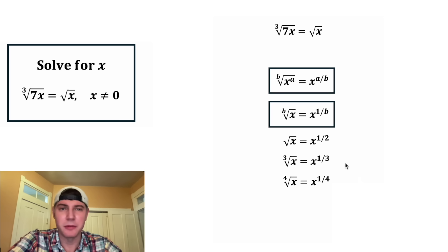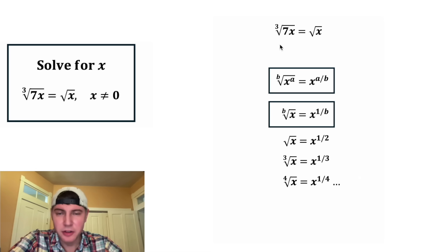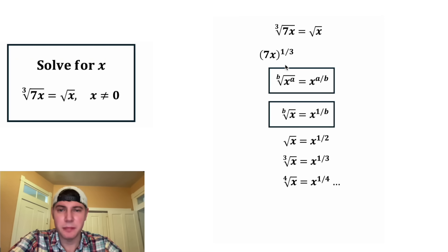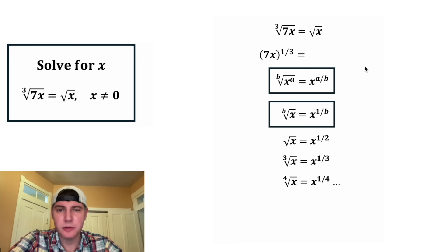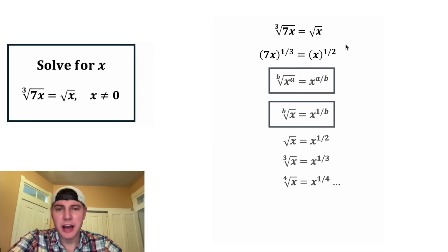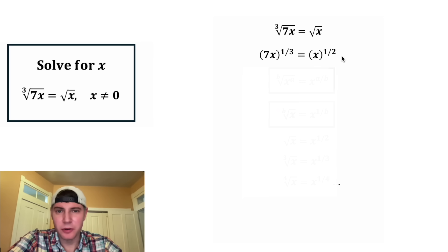The cube root of x would be x to the power of one third, the fourth root would be x to the power of one fourth, and so on. We can rewrite this cube root of the quantity 7x as 7x to the power of one third. And that's gonna be equal to the square root of x, which is x to the one half. So now we've written them in rational exponent form.